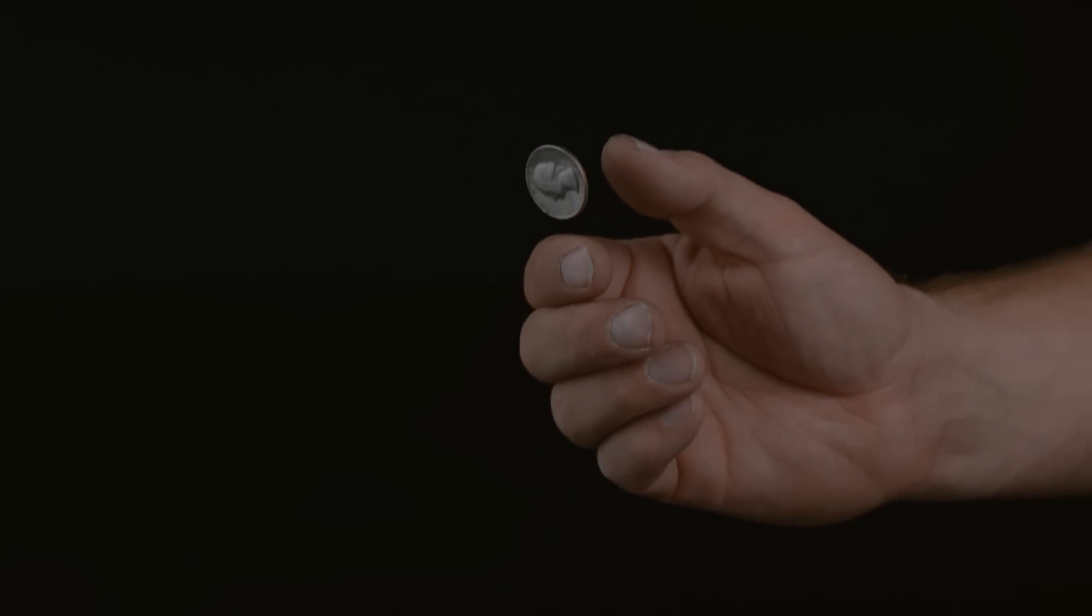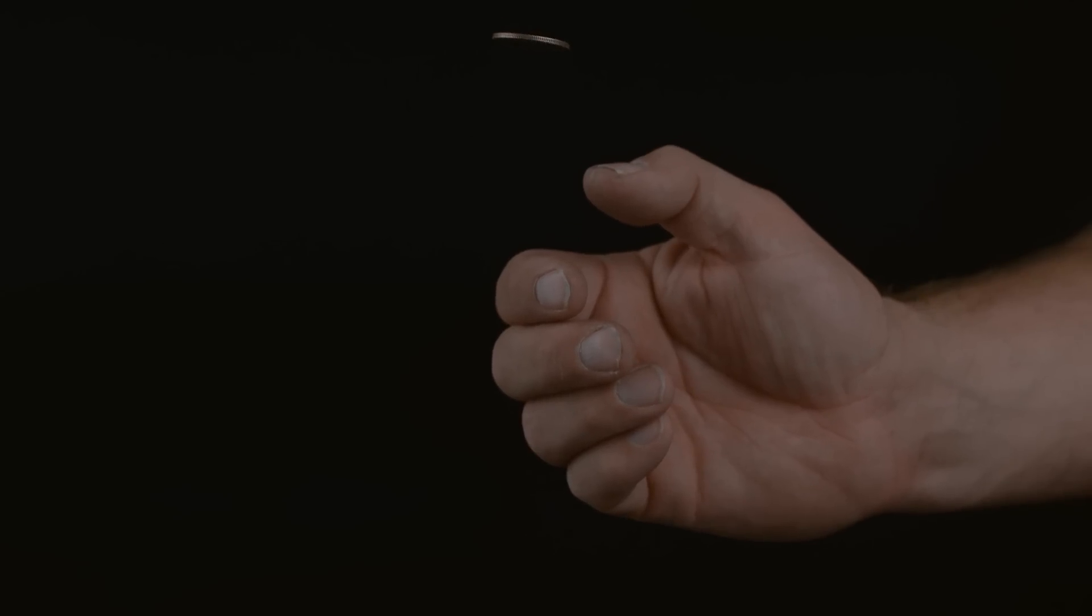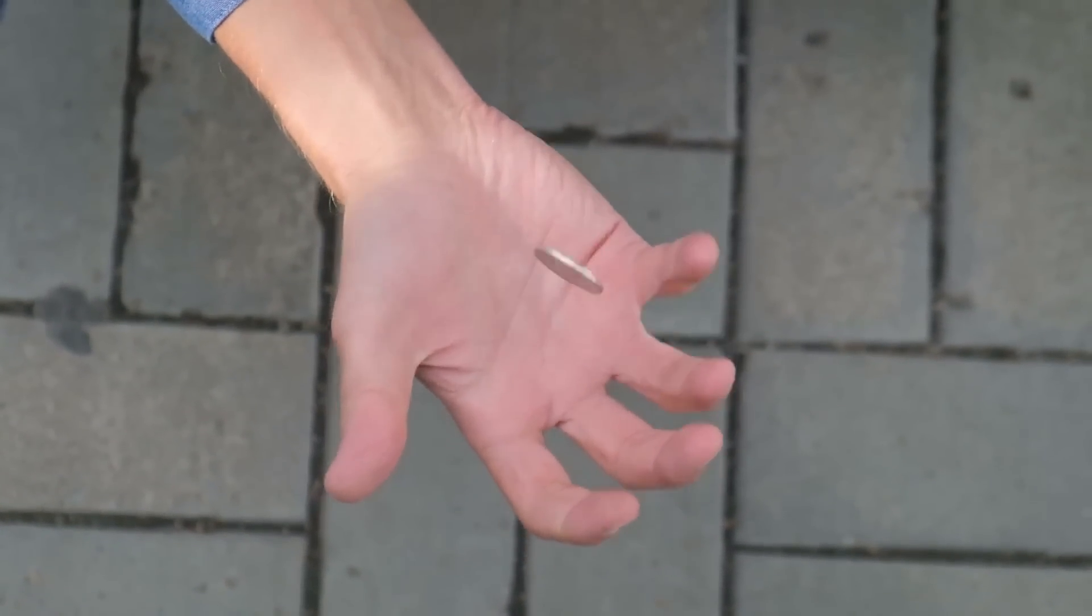How many times have you flipped a coin to decide something? We do it all the time. There's a 50-50 chance of landing heads or tails. We have no control over it. The result is totally random.